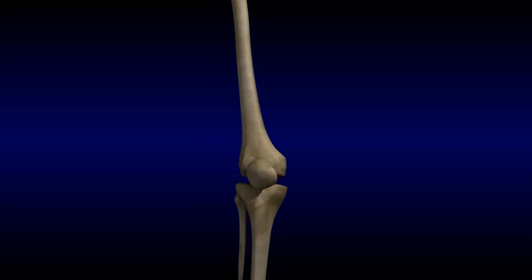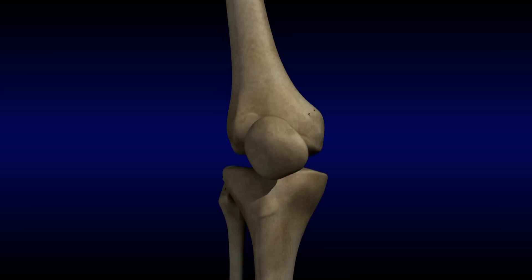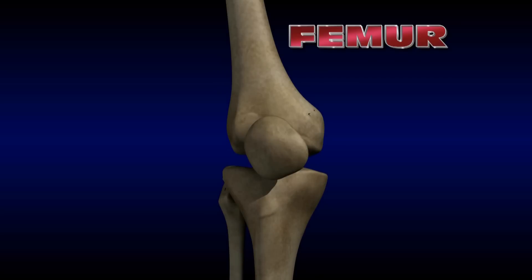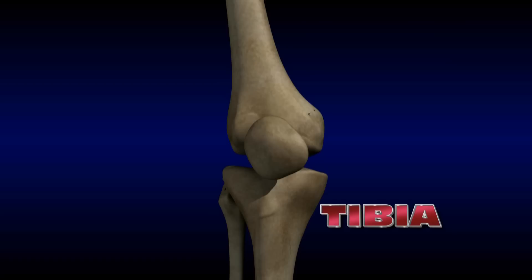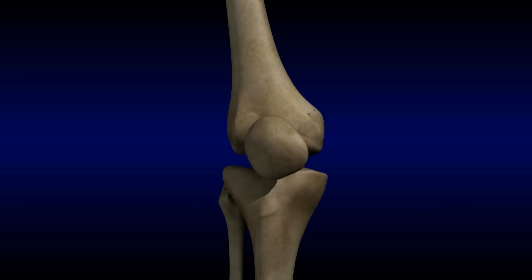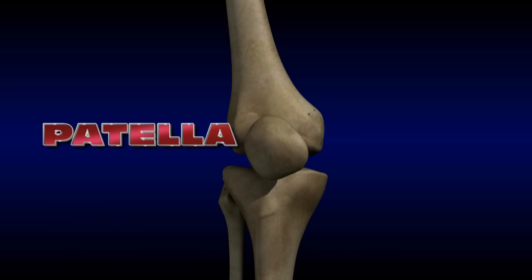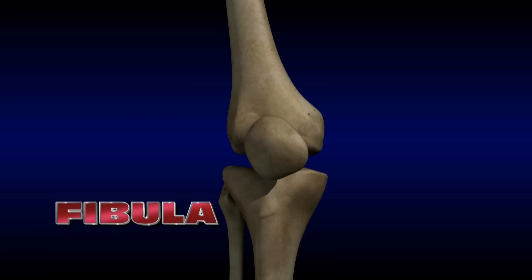The knee joint is comprised of three bones: the thigh bone, the femur; the shin bone, the tibia; and the knee cap, or patella. A fourth bone, the fibula, while not part of the knee joint itself, provides a place for muscles and ligaments that surround the knee to attach.